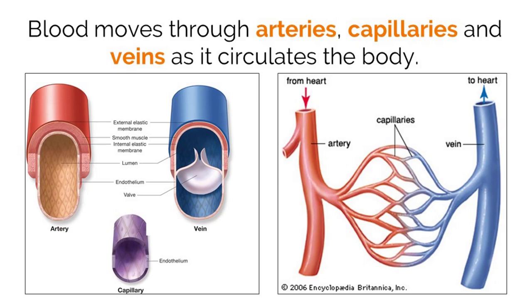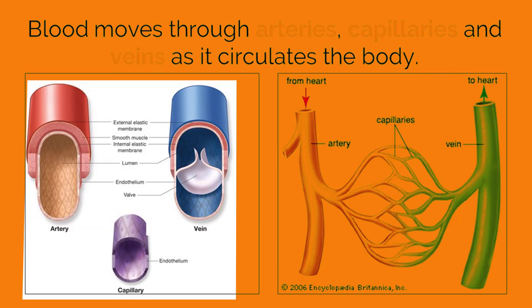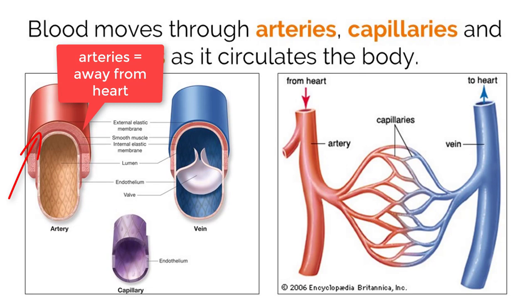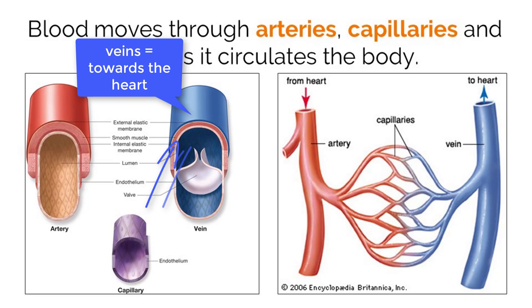There are three main structures that blood moves through in the circulatory system: arteries, veins, and capillaries. Arteries only move blood away from the heart; they have thick elastic membranes and a narrow interior space called the lumen, which keeps blood moving at high pressure. Veins only move blood towards the heart; they have thin walls and a large lumen, and also contain valves that prevent blood from flowing backwards, which is essential because pressure in veins is very low.